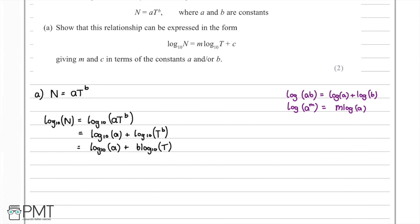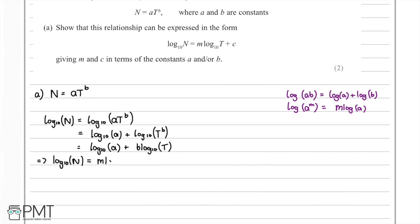We now have something that looks similar to what we've been asked for. The term b·log₁₀(t) is equivalent to m·log₁₀(t), and log₁₀(a) is our constant term c. So rewriting this: log₁₀(n) equals m·log₁₀(t) plus c, where m equals b and c equals log₁₀(a).